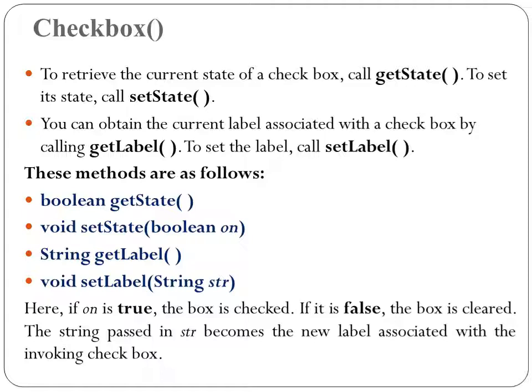The default state of a checkbox is unchecked. The third form allows you to set the initial state — if 'on' is true, the checkbox is initially checked, otherwise it is cleared. The fourth and fifth forms create a checkbox with a label specified by str and a group specified by cbGroup. If this checkbox is not part of a group, cbGroup must be null. To retrieve the current state use getState(); to set the state use setState(). To get or set the label use getLabel() and setLabel().